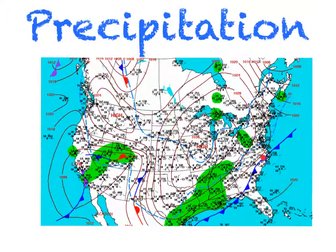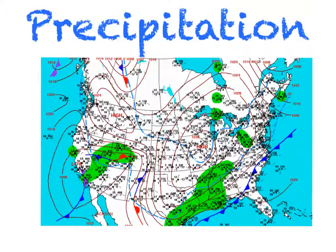It is also happening over here because of a cold front and a warm front meeting. Over here, where this cold front is, it is cooling down the warm air and creating precipitation. But as you can see up here, where there are some highs, there is no precipitation because high pressure systems cannot create precipitation.